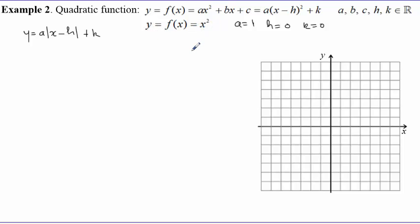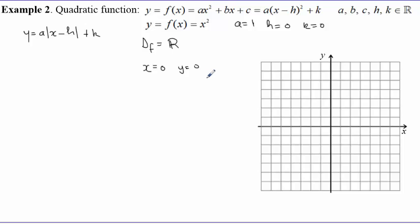What we call the parent function for these types of functions is f(x) = x². For any real number, this is always defined, so the domain of this function is the set of real numbers — it's defined everywhere on the real number line. If we choose x = 0, we get y = 0, so the point (0, 0) is on the curve.